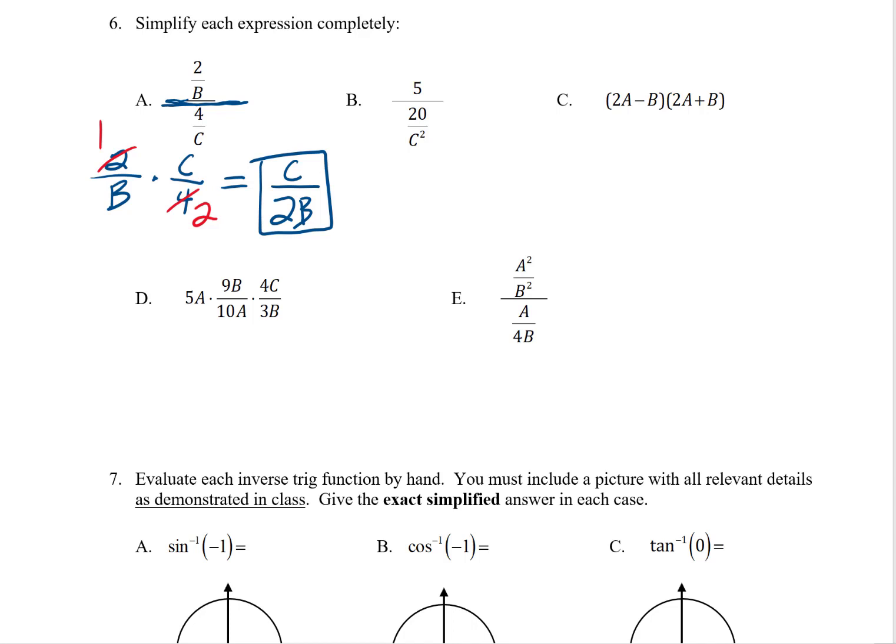I can take a similar approach here in letter B. Here's the big fraction bar. So this is 5, I could even write 5 over 1, times the reciprocal of the second fraction, which would be C squared over 20. So dividing by 20 over C squared is the same thing as multiplying by C squared over 20. Again, I've got some cross-cancelling I can do, and when I multiply across, I get C squared on the top and 4 on the bottom.